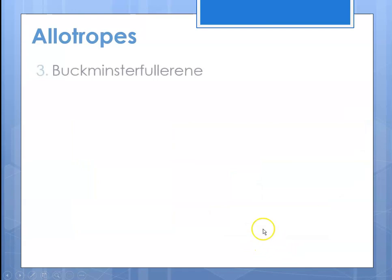And then the third type of allotrope for carbon that we talk about is Buckminster Fullerene. And I'm going to show you a 60-carbon version of it.